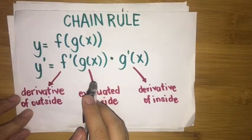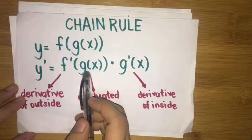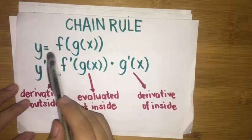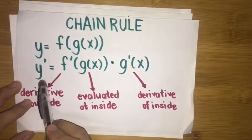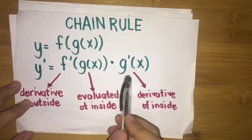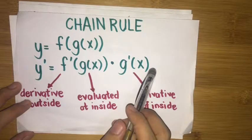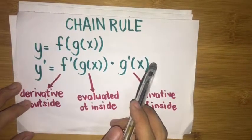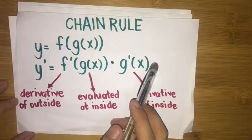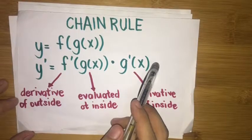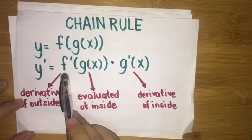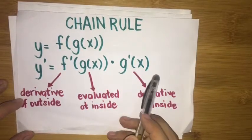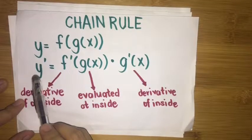In the first part, we discussed the formula for the chain rule: if we have a function y given by the composite function f of g of x, the chain rule formula is y prime equals f prime of g of x times g prime of x. I introduced you to the outside-inside function concept of chain rule, and we had examples where we decompose a composite function into its f of x and g of x, finding f prime of g of x and g prime of x, then multiplying them to find the final answer for y prime.